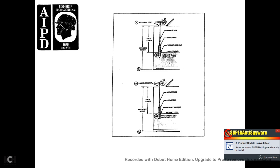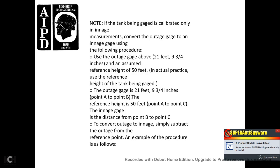41. Outage tape, outage bob, product cut. 42. Bob cut — product level — encoded with the fuel indicating paste. Note: if the tank is calibrated only in inch measurements, convert the outage gauge to an inch gauge using the following procedures. 43. Use an outage gauge. 44. Example: outage gauge is 20 feet 9 and three-quarter inches. Assume a reference height of 50 feet (in actual practice, use the reference height of the tank being gauged).